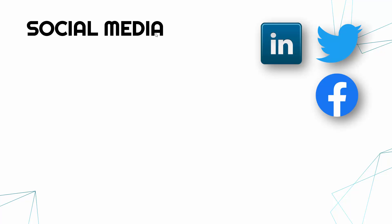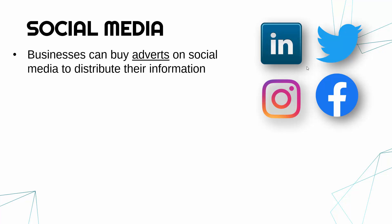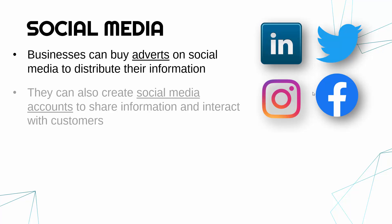A fourth and final method to cover in this video is social media — examples include LinkedIn, Twitter, Instagram, and Facebook. It's effectively a website where you can join and share information with other people, both people you know and people you don't know. In terms of what a company could use social media for: they can buy adverts to distribute their information, since these platforms are free but make money through advertising. But very commonly now, companies set up their own social media accounts to share information and interact with customers.